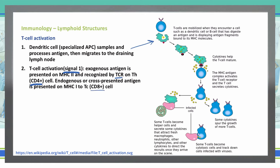Remember the rule of eights: CD4 pairs with MHC-2 because two times four is eight, and CD8 pairs with MHC-1 because eight times one equals eight.